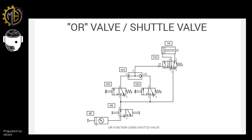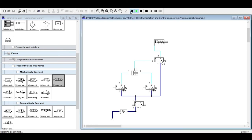The OR valve — also called a shuttle valve — works differently. You only need one signal from either switch to produce an output. To demonstrate, we will replace the processing element in our circuit from the dual pressure valve to the shuttle valve.